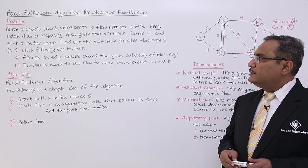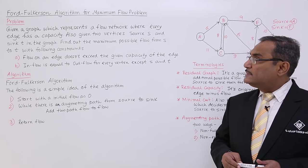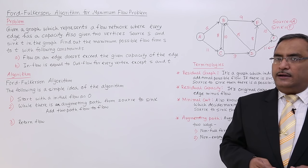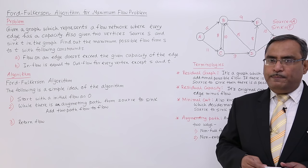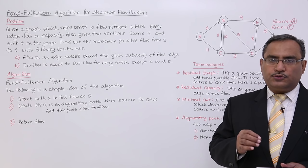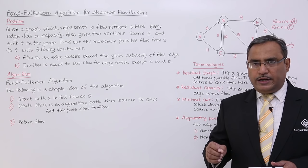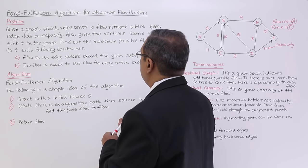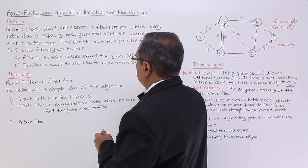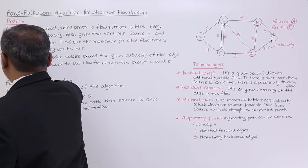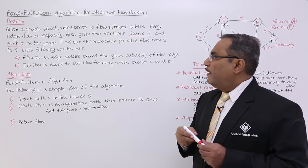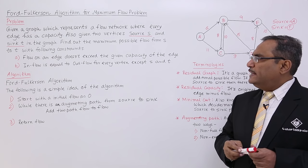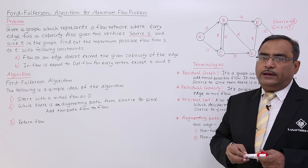Also given two vertices: one is source s and another one is the sink t in the graph. The flow will originate from source s and will get terminated at sink t. These are two special types of vertices in the graph. Find out the maximum possible flow from s to t with the following constraints.